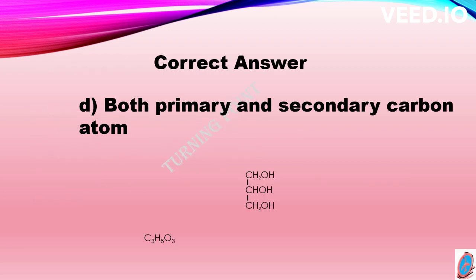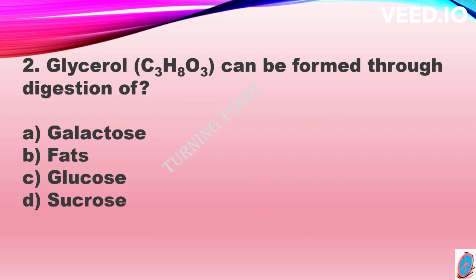Second question: glycerol can be formed through the digestion of option A galactose, option B fats, option C glucose, and option D sucrose. The correct answer is option B, fats.